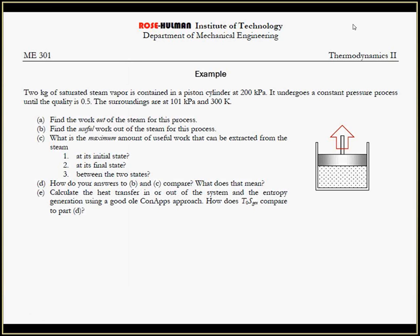We need to find the work out of the system, the useful work out of the system, and the maximum amount of useful work out of the system for several different things, then compare all those things to each other. Finally, we're going to revert back to the days of CONs and calculate the heat transfer in and out of the system, use that with entropy accounting to calculate SGEN and the irreversibility, and compare that to everything we've been doing previously. Pretty rich problem, so let's get started.